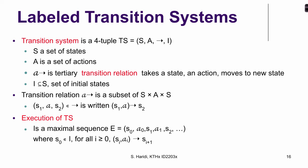What we are going to use is what we call a labeled transition system. Now that you know what a transition system is, a labeled transition system is quite simple: it tells you that if you are in state Si and moving to state Si+1, you do so by performing an action a. A labeled transition system is a four-tuple: a set of states, a set of actions, the transition relation, and a set of initial states.